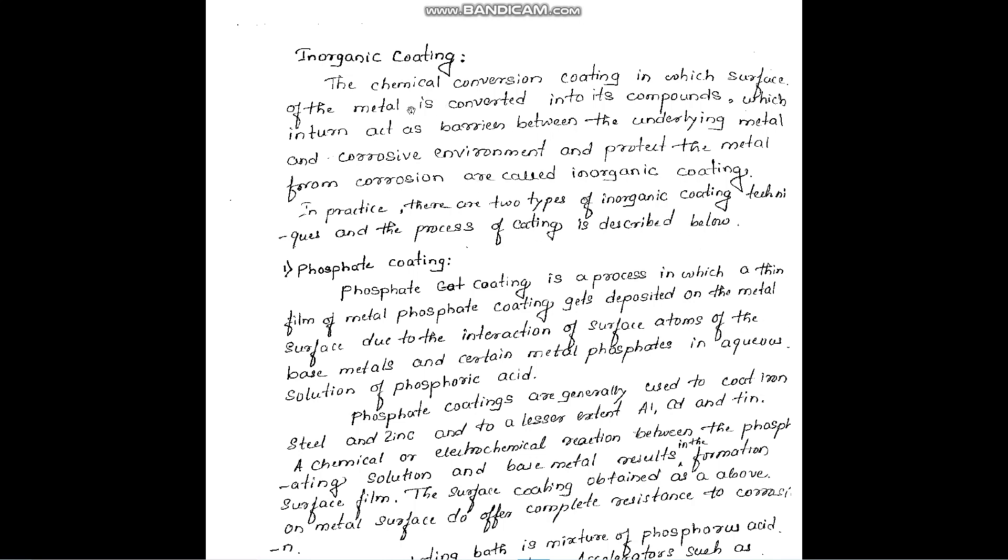Today we are going to discuss inorganic coating. The inorganic coating is a chemical conversion coating in which the surface of the metal is converted into its compound, which then acts as a barrier between the underlying metal and corrosive environment and protects the metal from corrosion.